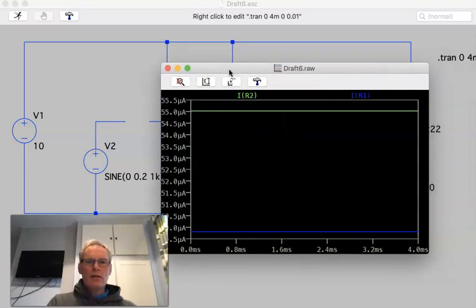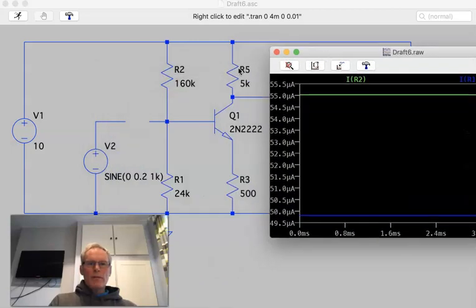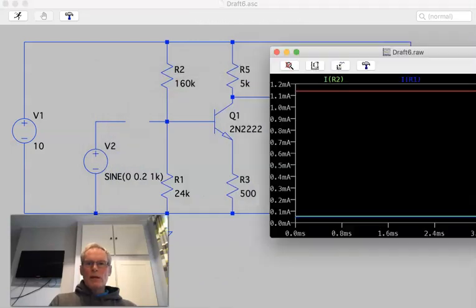So 55 microamps and 50 microamps, which is pretty cool. Quiescent collector current here we've got 1.15 milliamps.